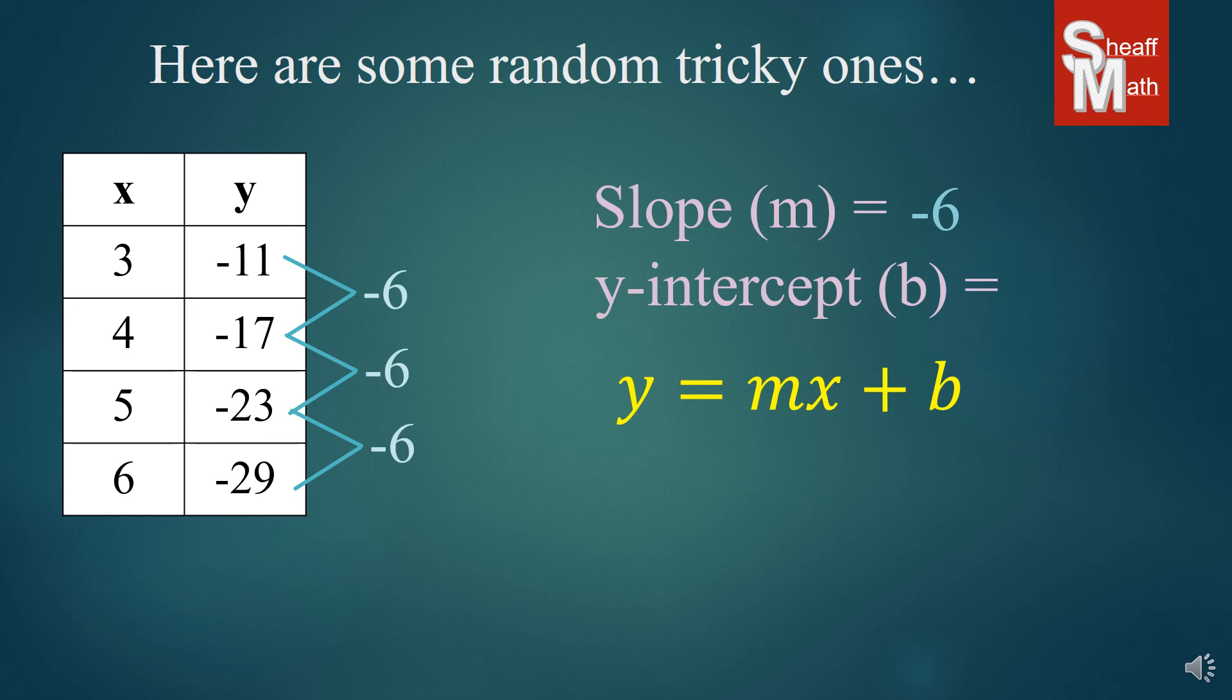Now to find the 0 term, we have to go from 3 all the way back to 0. And so since our rate of change is minus 6, then we're going to add 6 in reverse. So we're going to add 6 3 times to get our 0 term. And that turns out to be positive 7. And so we put those numbers in our equation and we've got it.